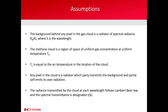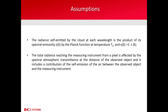The assumptions we make for this model are the following. The background behind any pixel in the gas cloud is the radiator of spectral radiance Rb of lambda, where lambda is the wavelength. The gas cloud is in a region of space of uniform gas concentration at uniform temperature T of C, which is the same as the air temperature in the location of the cloud. Any pixel in the cloud is a radiator which partly transmits the background and partly self-emits its own radiation. The radiance transmitted by the cloud at each wavelength follows Lambert-Beer law, and the spectral transmittance is designated tau of lambda. The radiance self-emitted by the cloud at each wavelength is the product of its spectral emissivity epsilon by the Planck function at temperature T of C.